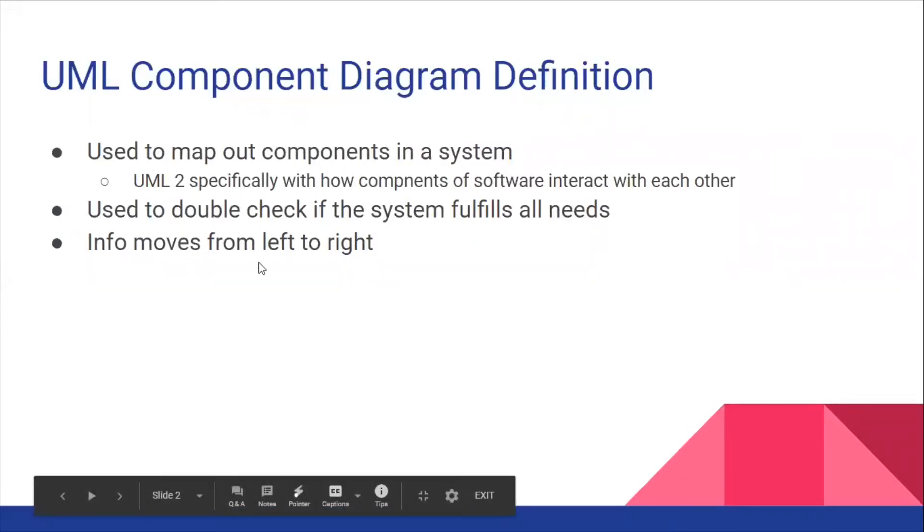A UML component diagram's main use is to double check if a system fulfills all needs of different components, so if the components are all talking with each other and all are able to get data and none of them are starving for any information, that all of the interfaces are mapped out.